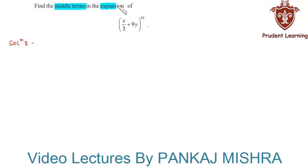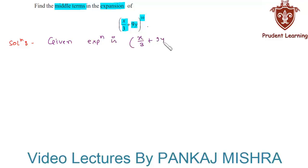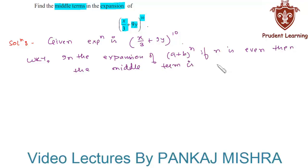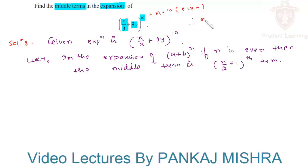Find the middle terms in the expansion of (x/3 + 9y)^10. The given expression is (x/3 + 9y)^10. We know that in the expansion of (a + b)^n, if n is even, then the middle term is the (n/2 + 1)th term. Since here n = 10, which is an even number, we can apply this rule.